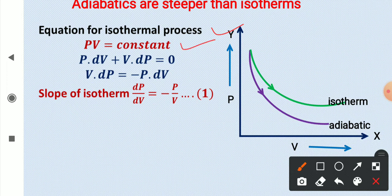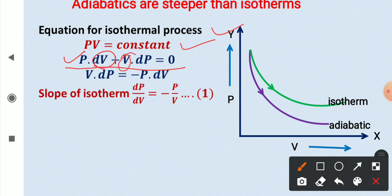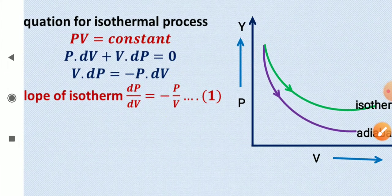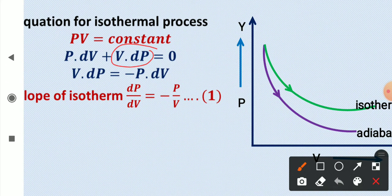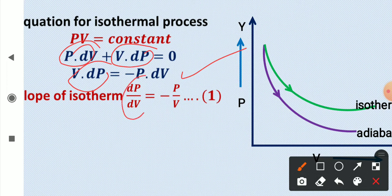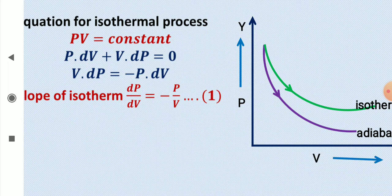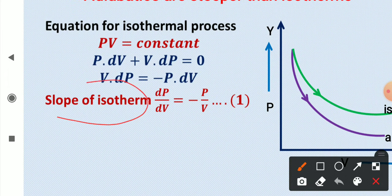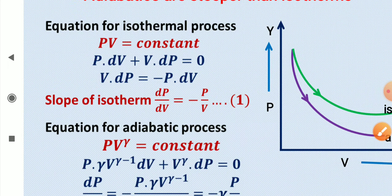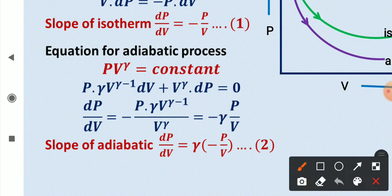For the isothermal process, the equation is PV = constant. Differentiating both sides using the product rule: V·dP + P·dV = 0. Rearranging: V·dP = −P·dV, so dp/dV = −P/V. This is the slope of the isotherm — equation (1).